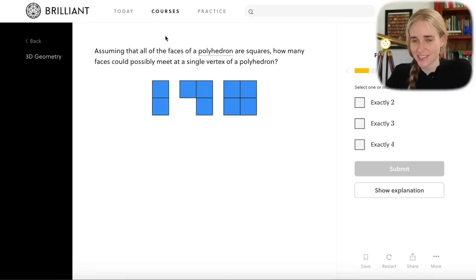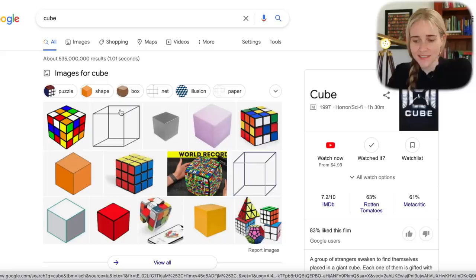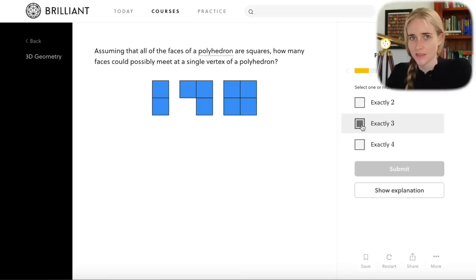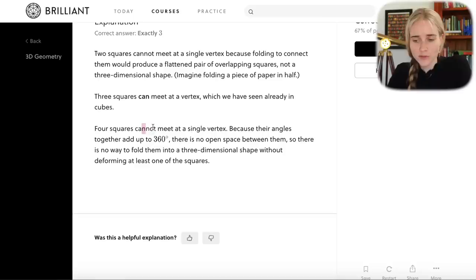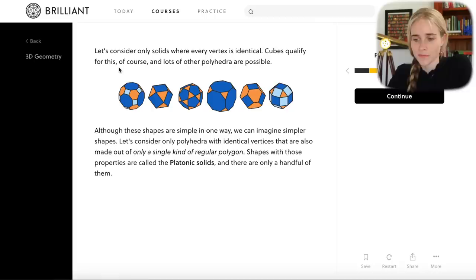They start by asking how many faces could possibly meet at a single vertex of a three dimensional shape, if all of those faces are squares. Well, a cube is such a shape. And if you look at the corner, you'll see that three faces are able to meet at that vertex. So we can plug in our answer as three, two squares would only fold to make a flat shape. And the four squares cannot meet at a single vertex, because there's no space to be able to fold them up.